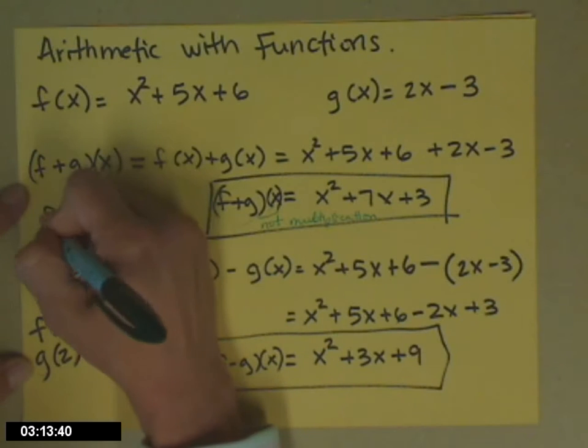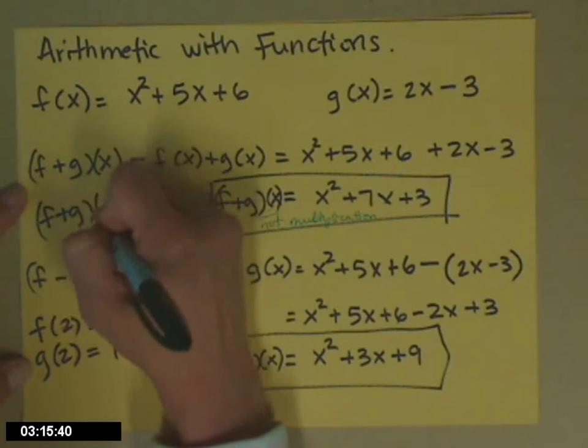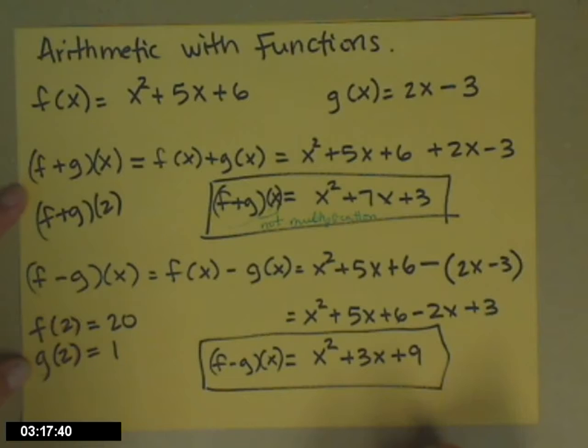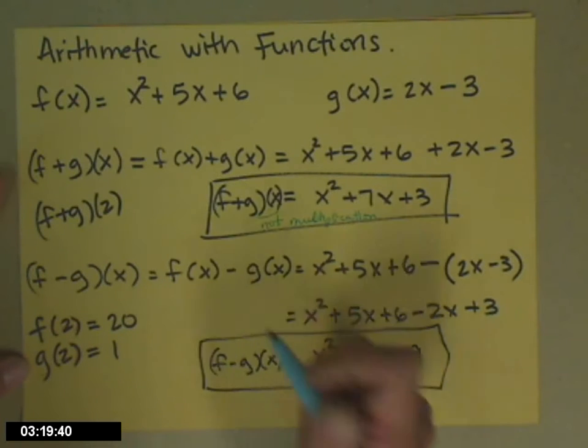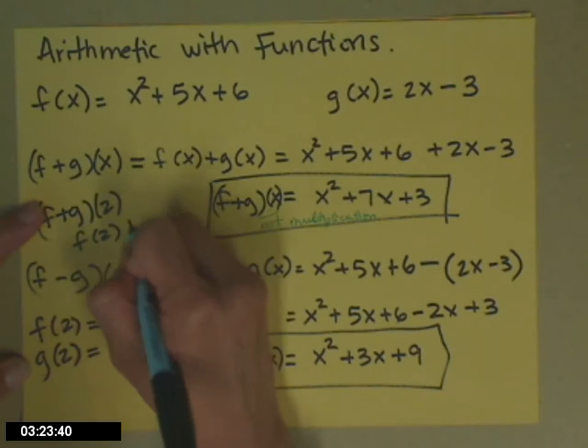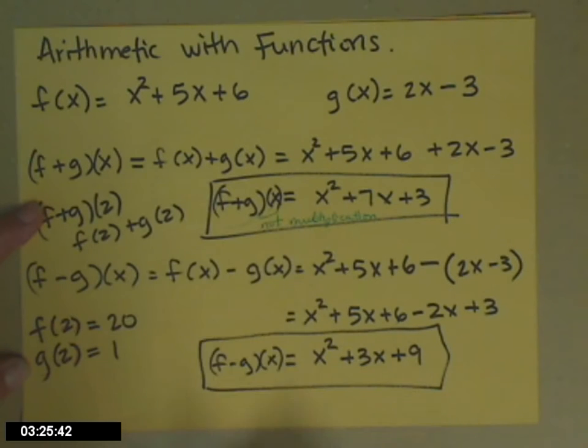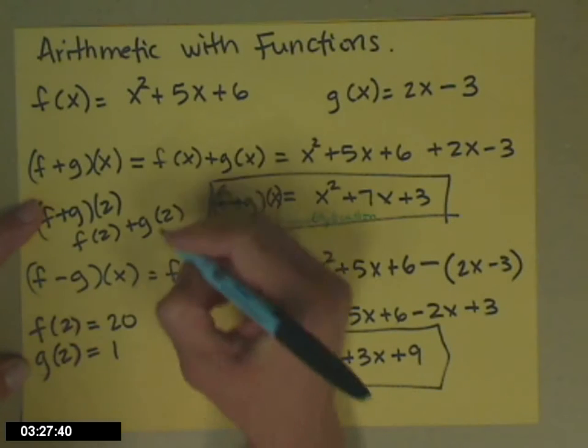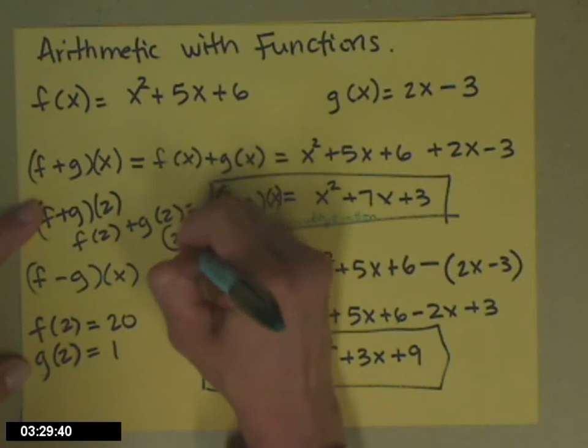If I would ask you to find f plus g of 2, you can get that two ways. One, you could do f of 2 plus g of 2, because I have those numbers. 20 plus 1 is 21.